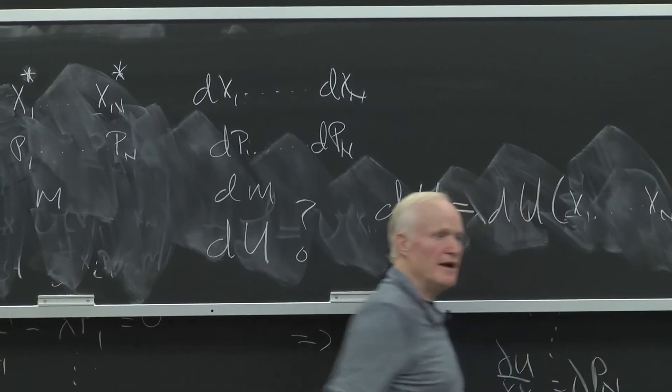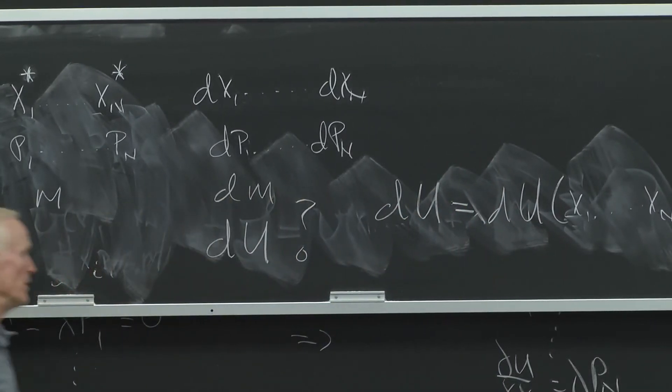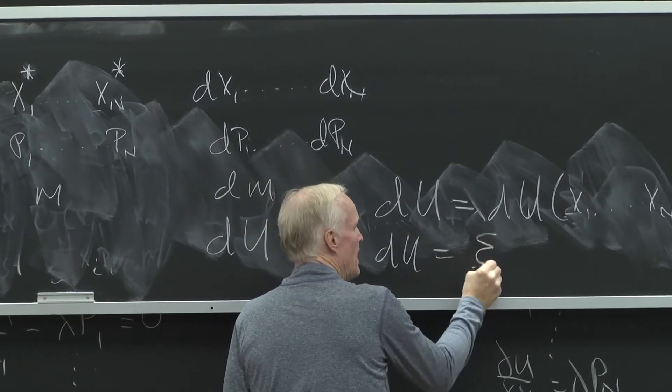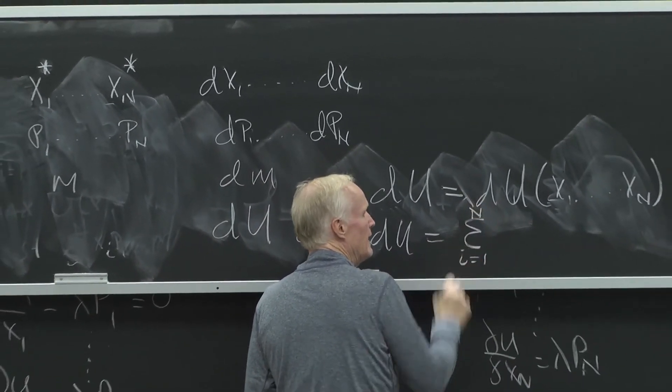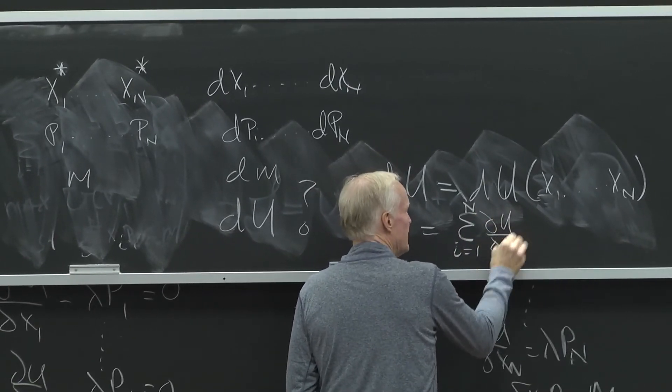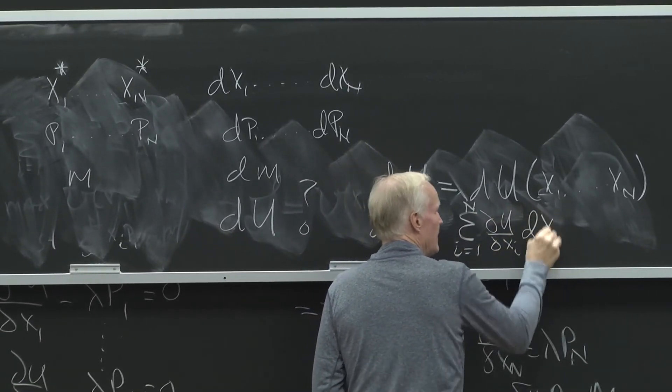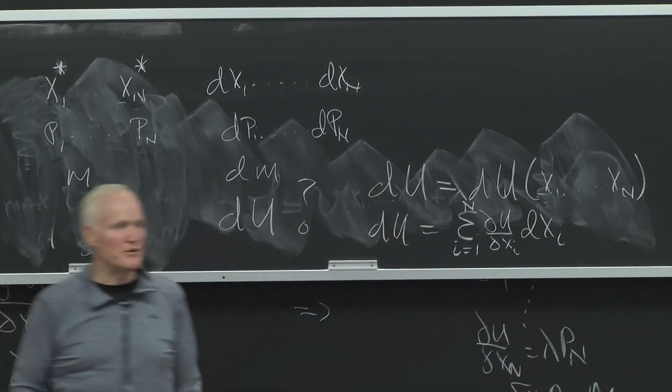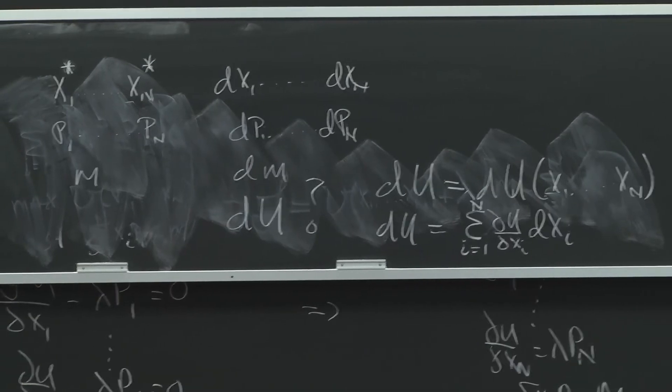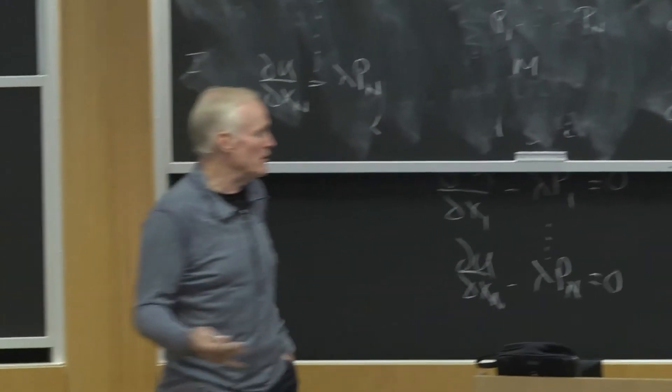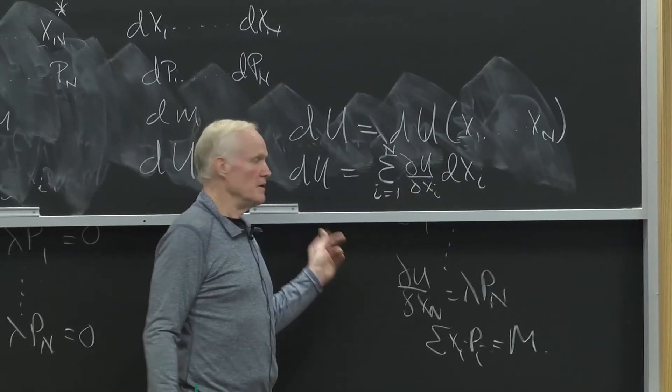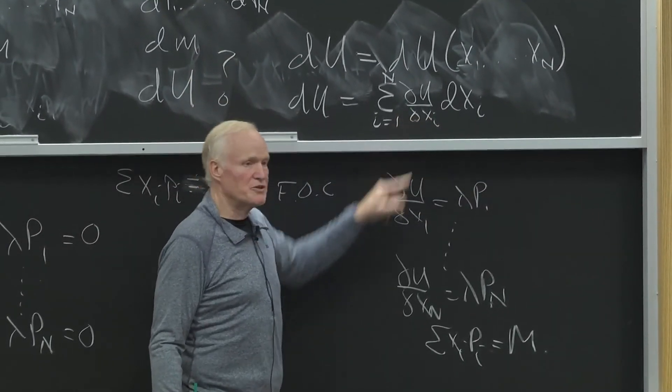What is DU? Well, it's DU of x1 up to xn. Everybody agrees with that, right? So, isn't DU equals the sum from i equals 1 to n of partial u partial xi dxi. Everybody agrees with that. It's DU, right? Why is utility different than it was a minute ago? It changed because I changed all my consumptions.